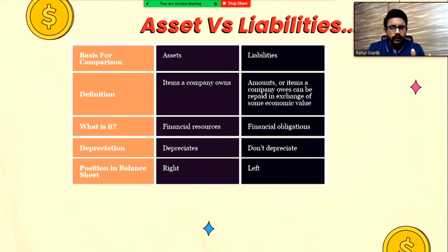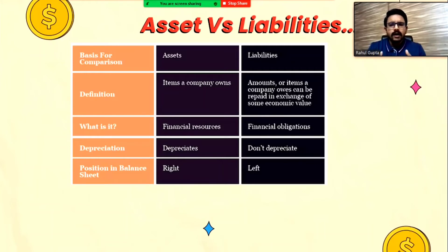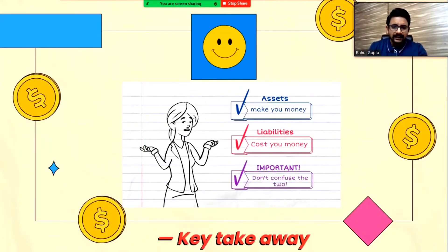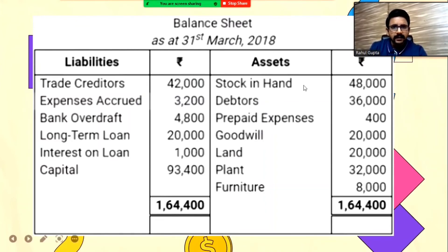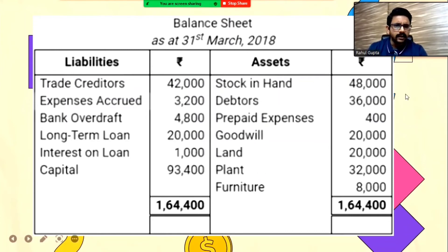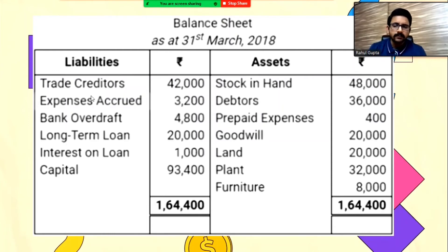A balance sheet is basically a document — at an organizational or personal level — where you write down your assets and liabilities. It is a collection of assets and liabilities. We can also create a balance sheet at an individual level. Generally, assets are placed on the right side of the column and liabilities on the left side. As you can see in this sample balance sheet, on the asset side there are items like stocks, debtors, prepaid expenses, goodwill, land, plant, and furniture. On the liability side there are items like trade creditors, expenses, bank overdraft, long-term and short-term loans, interest, and capital.